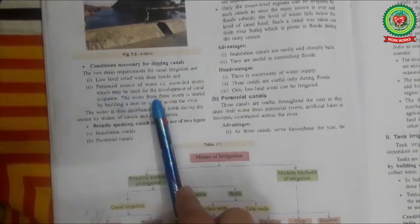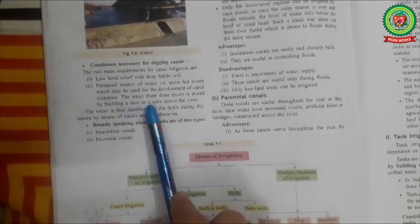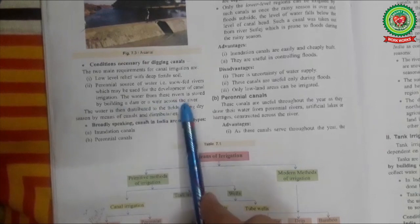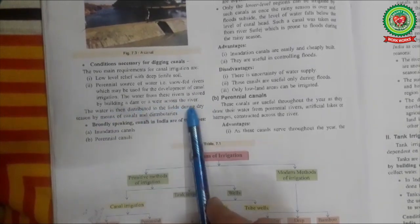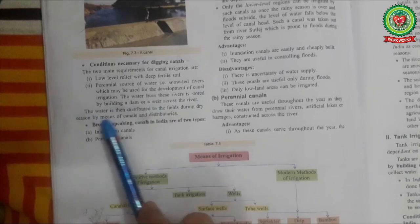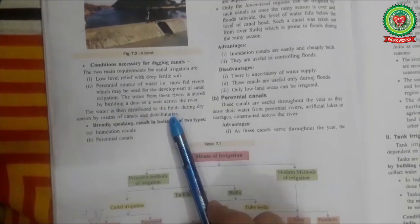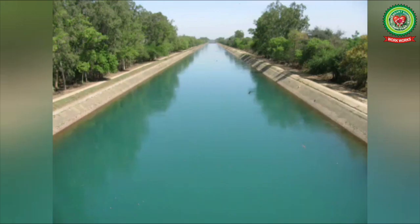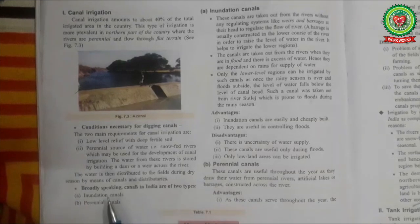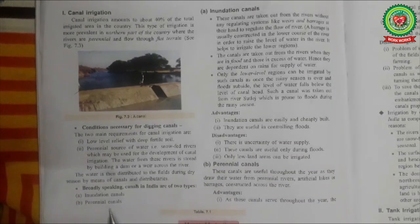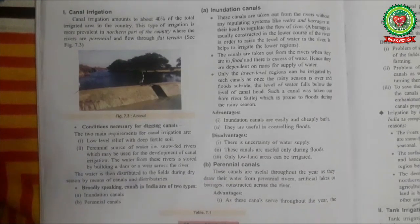The water from these rivers is stored by building a dam or weir across the river. The water is then distributed to the fields during the dry season by means of canals and distributaries. Broadly speaking, canals in India are of two types: inundation canals and perennial canals.